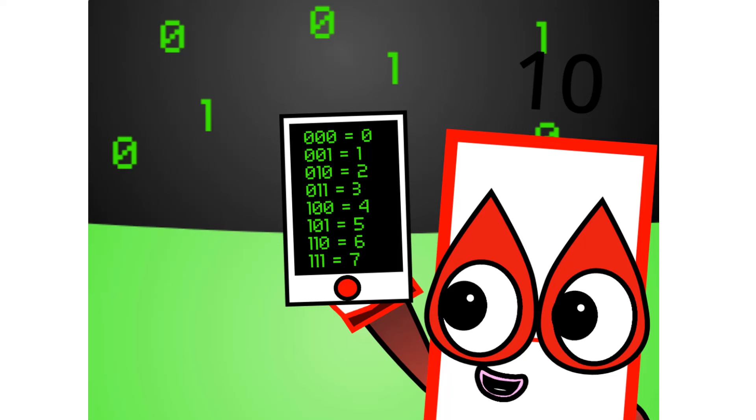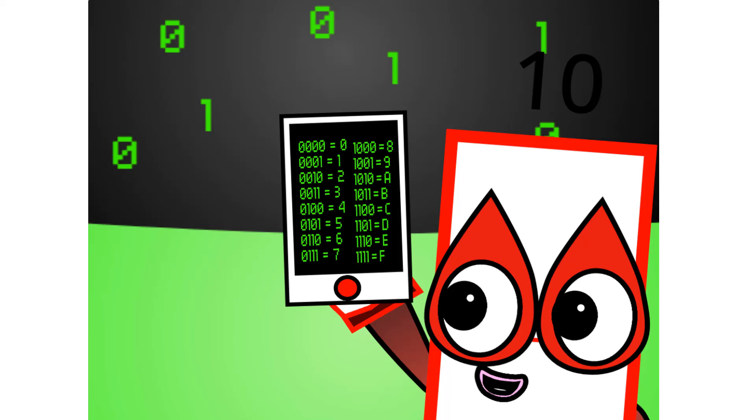There are 8 different combinations of 3 digit numbers in binary. This means that binary can easily be coded into octal. There are also 16 different combinations of 4 digit numbers in binary. This means that binary can easily be coded into hexadecimal too.